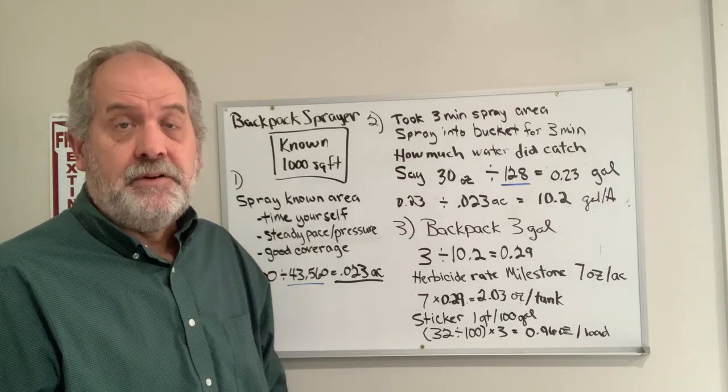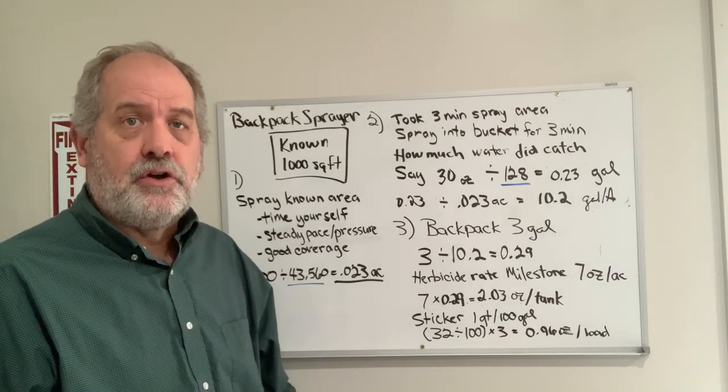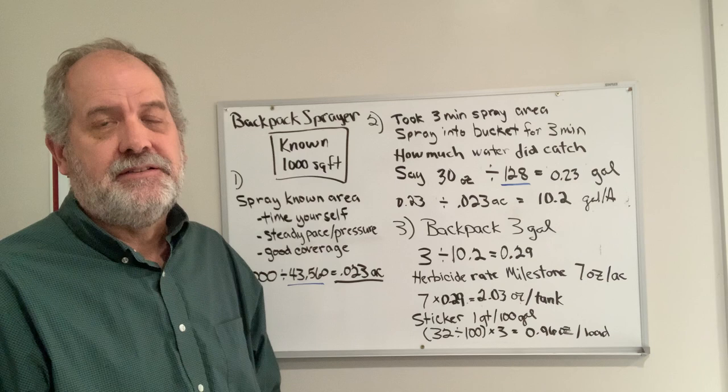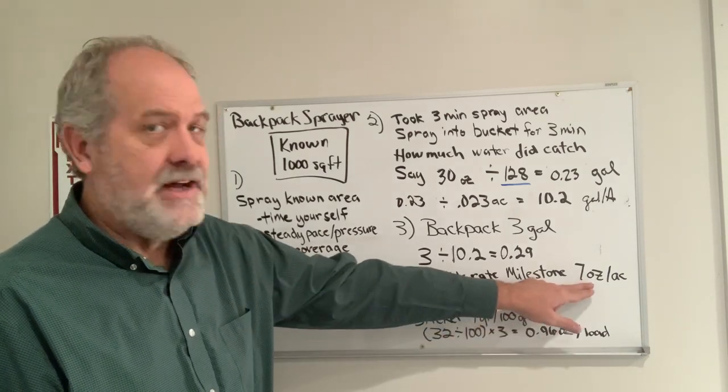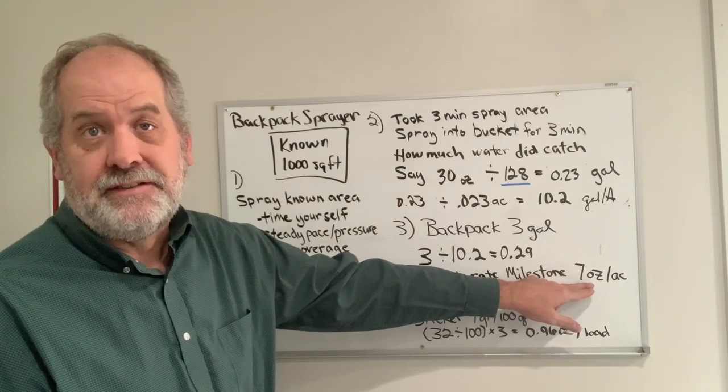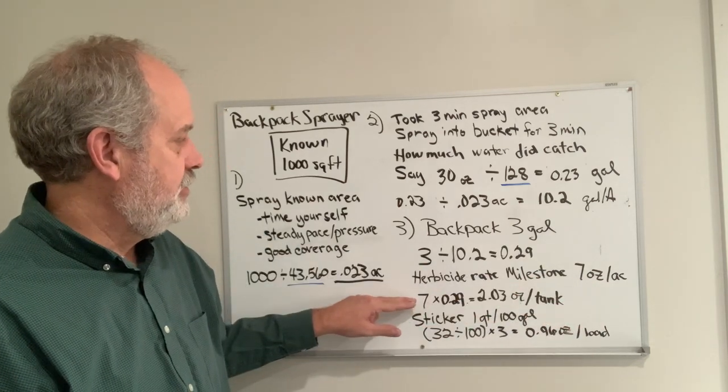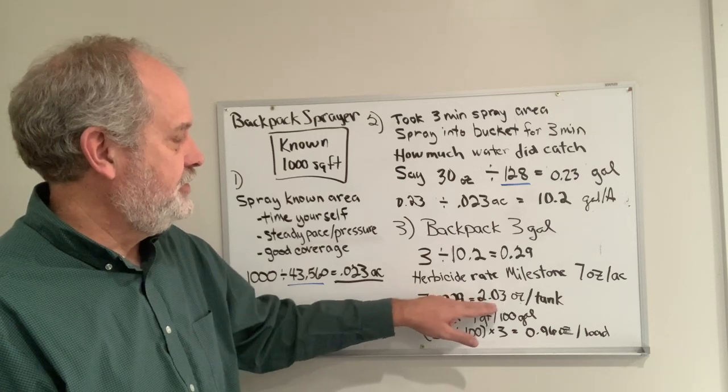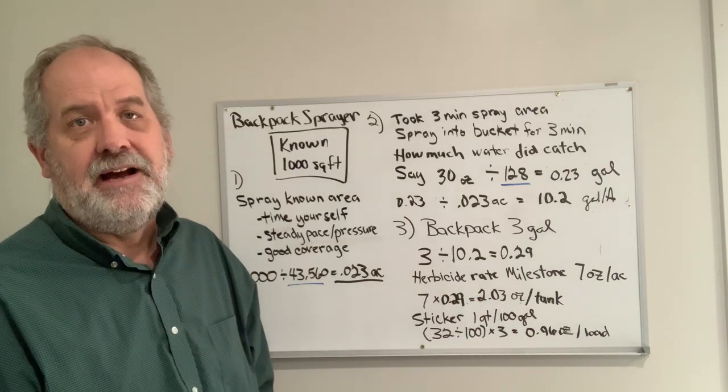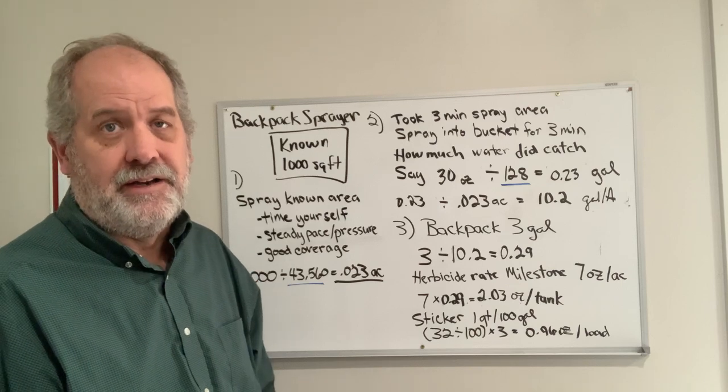This should help you get into a range and get close to making an effective pesticide application. You're able to adjust this number if you were to use a product that's 32 ounces, for example 2,4-D. You'd simply take 32 times 0.29, and that would tell you how many ounces of a 2,4-D product to put in there.